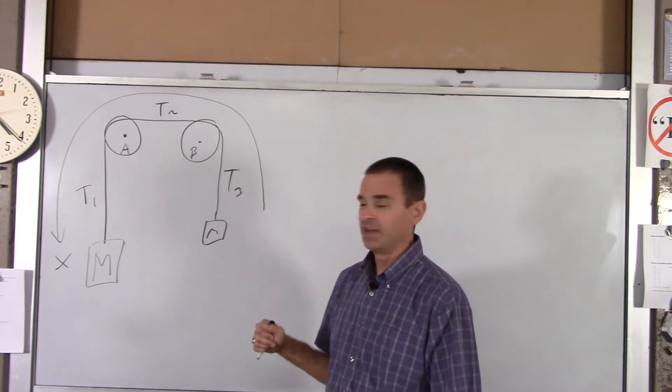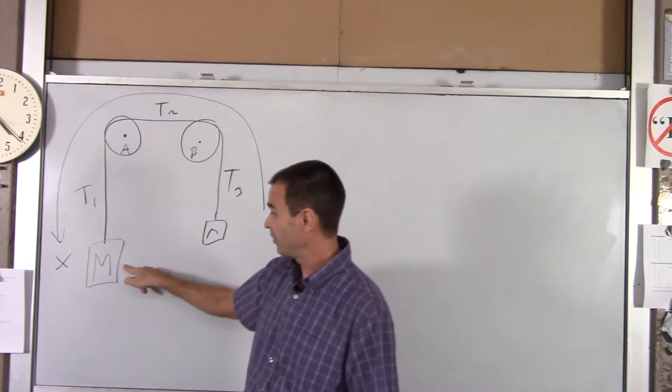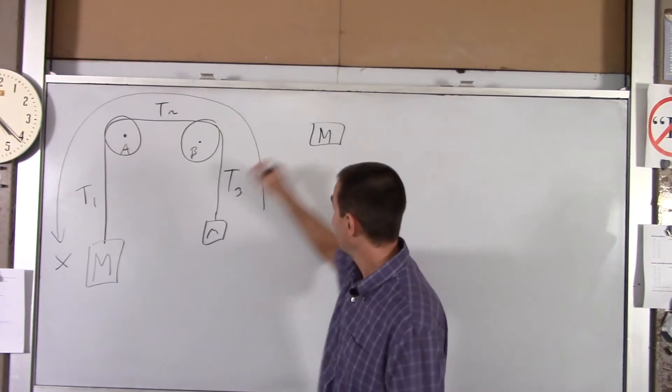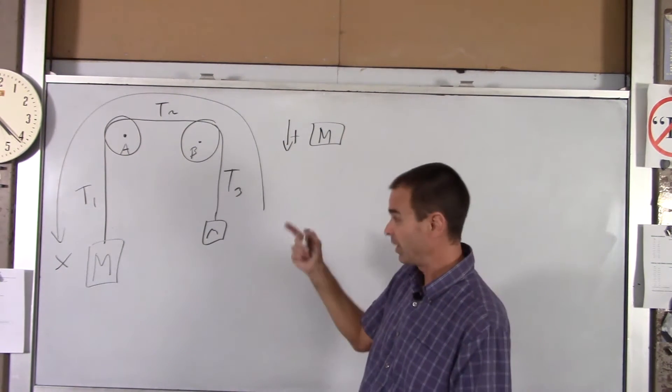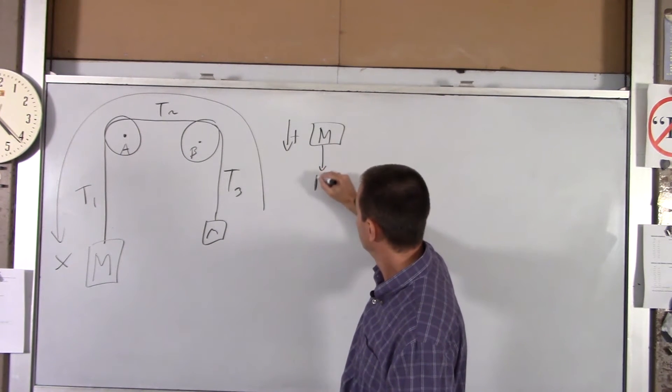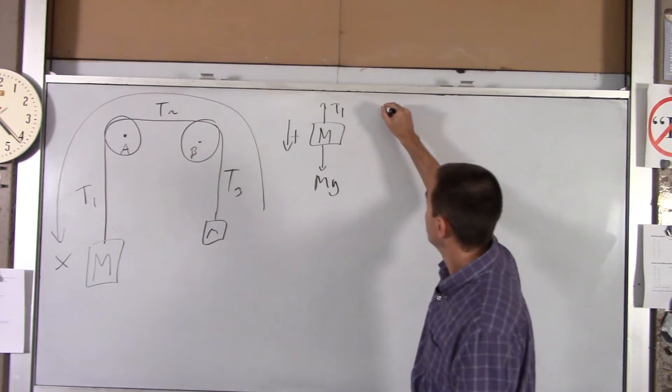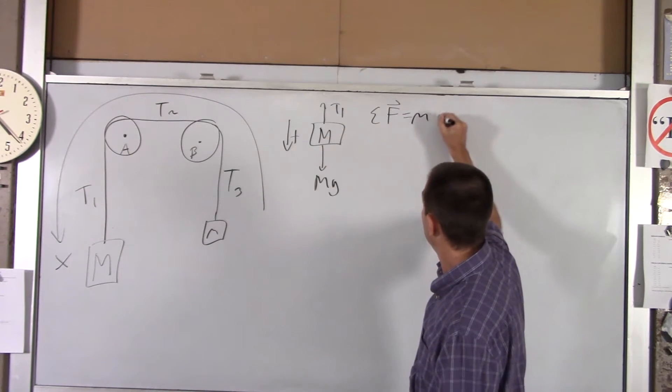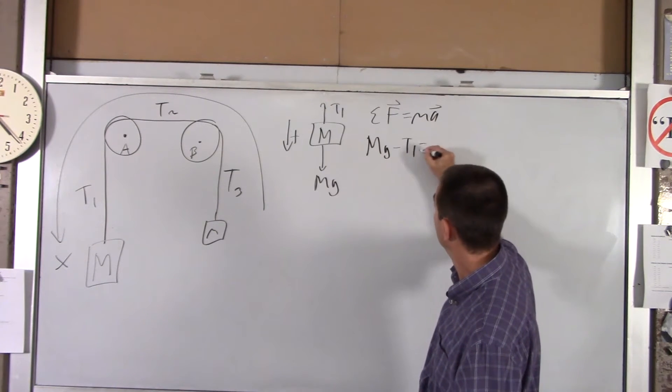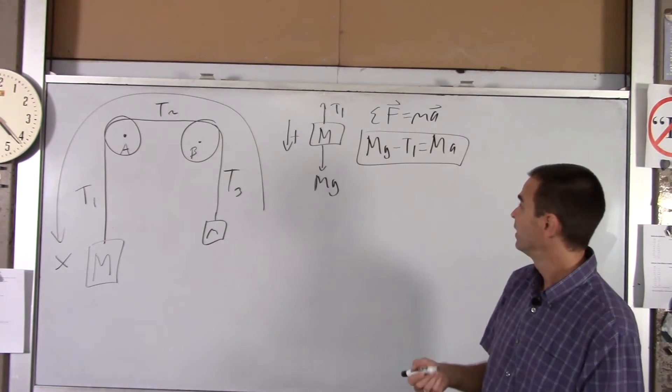Basically you're going to draw an FBD for each object that's moving. I'm just going to work my way around the system. First we've got the big mass. For him, down is positive. That's really important. If you mess that up, the rest of the problem isn't going to work. The only two forces acting on him are big Mg and T1. If we write out Newton's Second Law for him, writing net force equals Ma, you've got big Mg minus T1 equals big Ma. So we've got one equation. We've got two unknowns though: T1 and A.